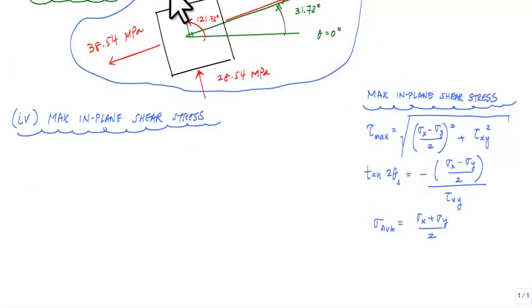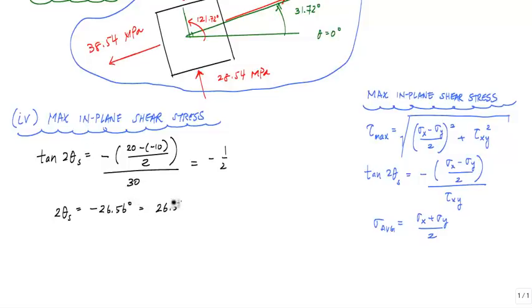The first thing I want to do is calculate the angle using this relationship right here. That would tell me that tangent 2 theta s is equal to negative 1 half. If I take the inverse tangent, I would get negative 26.56 degrees, which is the same as 26.56 degrees going clockwise. Theta s would just be 13.28 degrees going clockwise.